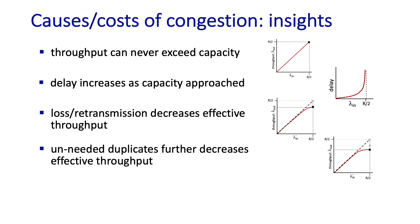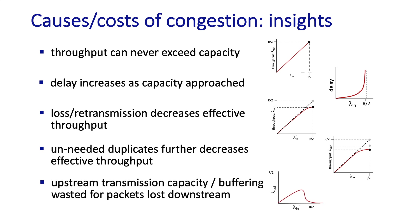Finally, in the multi-hop case, upstream resources — buffers and bandwidth — used for packets that are eventually lost downstream are wasted resources. In overly congested scenarios, this can cause the end-to-end throughput to actually go to zero, a phenomenon referred to as congestion collapse.